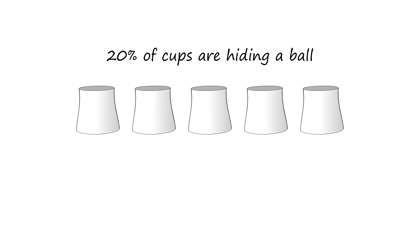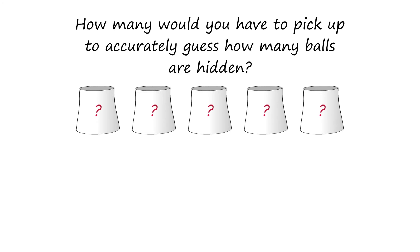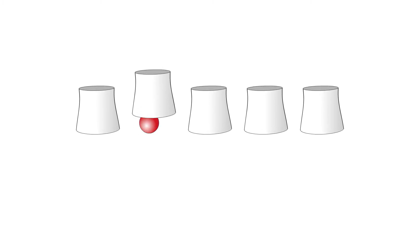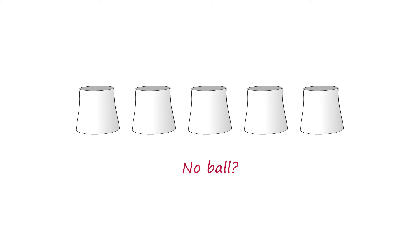Think about a shell game with five cups face down. Before you arrive, the dealer placed one ball in the game, so 20% of the cups are hiding a ball — but you didn't see him do it. How many cups would you have to pick up to accurately guess how many balls are hidden? Realistically, you'd probably have to look under all of them. If you start lifting cups and encounter the ball early and stop, your prediction of how many more balls you will find will be too high. If you are lifting cups and not finding any ball and stop, you might predict there is no ball at all.